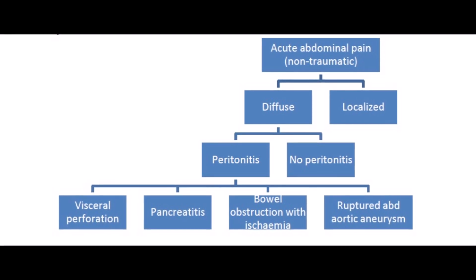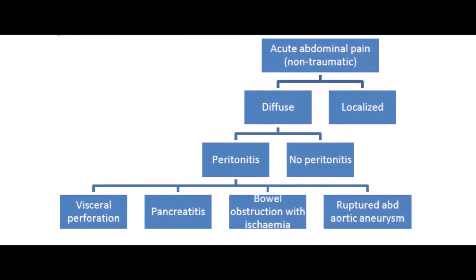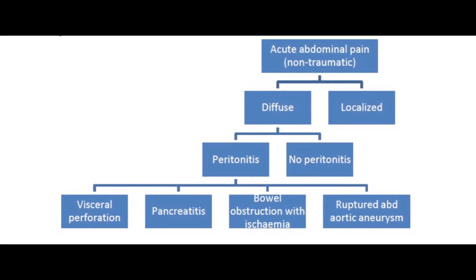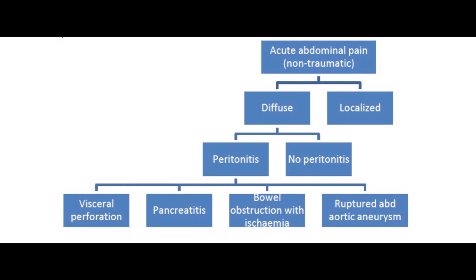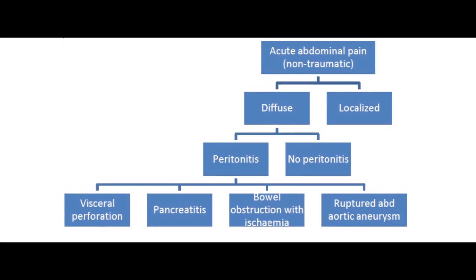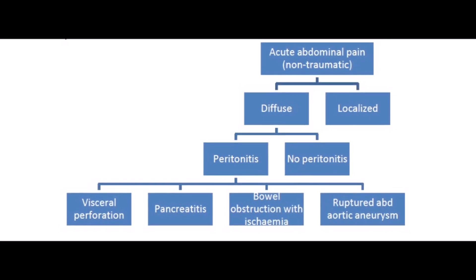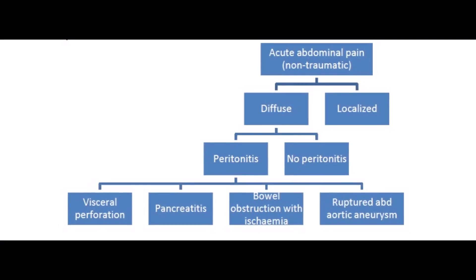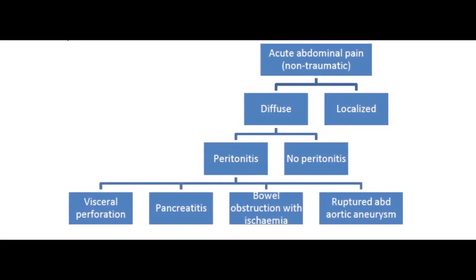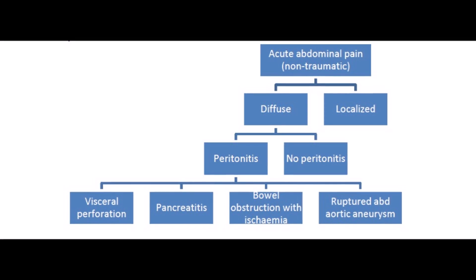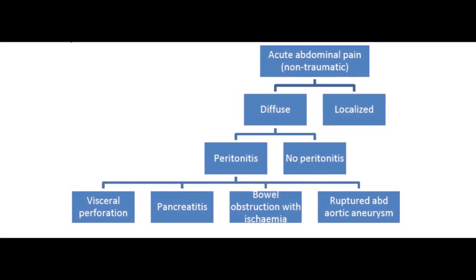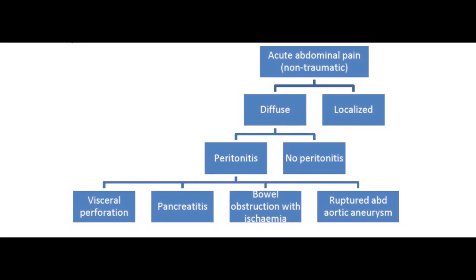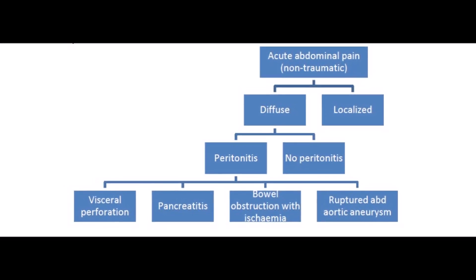Acute non-traumatic abdominal pain has two types: diffuse and localized. In diffuse pain, there could be peritonitis or non-peritonitis. In peritonitis, causes include visceral perforations, pancreatitis, bowel obstruction with ischemia or rupture, and abdominal aortic aneurysm.